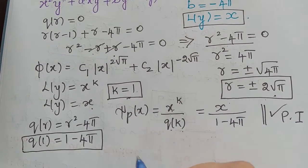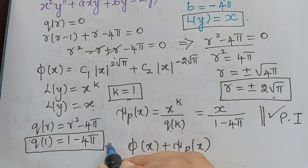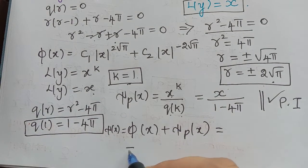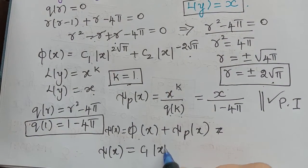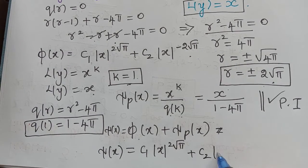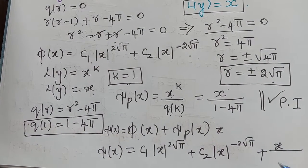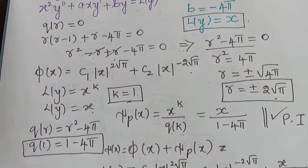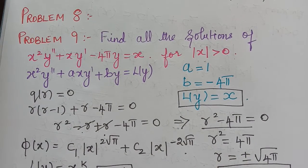The general solution is ξ(x) = φ(x) + ξₚ(x) = c₁ |x| to the power 2√π plus c₂ |x| to the power negative 2√π plus x over (1 minus 4π). All three problems are non-homogeneous Euler's equations solved using the same method. Kindly follow the next video for one more problem on Euler's equation. Thank you.